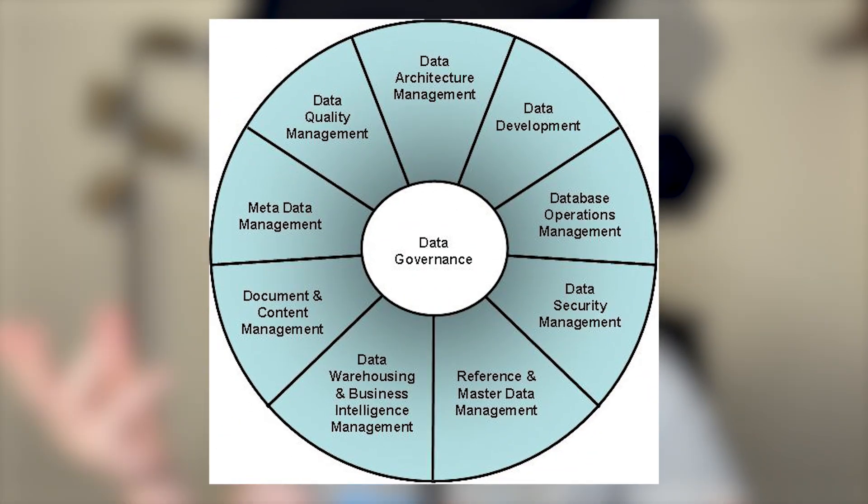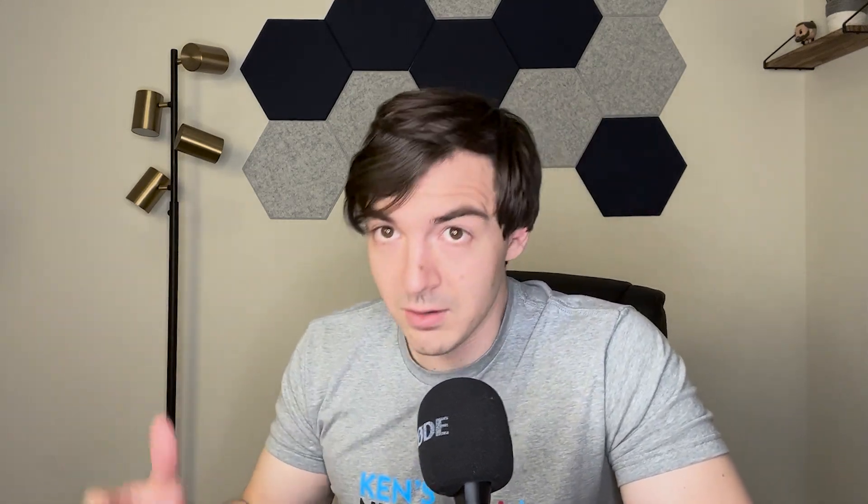Now let's round out today with something a little less technical, and that is data governance. Data governance isn't the most exciting subject, but it's arguably a very important subject when it comes to managing data. There's a circle of data governance from DEMA that shows the different important aspects — whether it's data quality or data management. Data governance is basically a collection of processes, roles, policies, standards, and metrics that ensure the effective and efficient use of information in enabling organizations to achieve their goals.